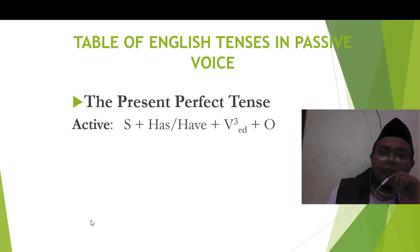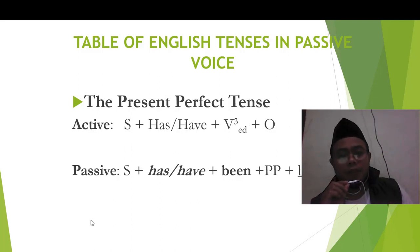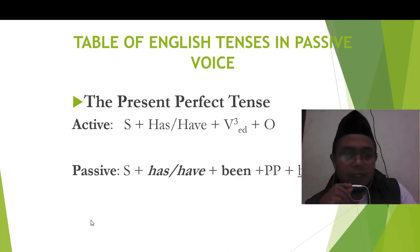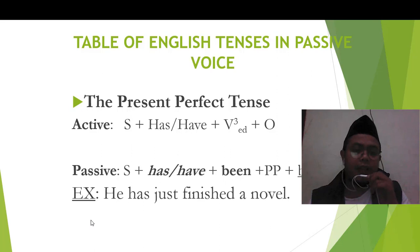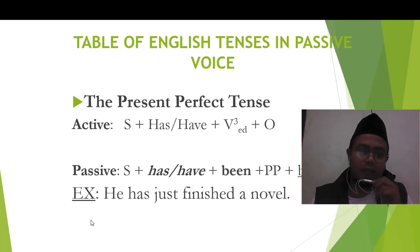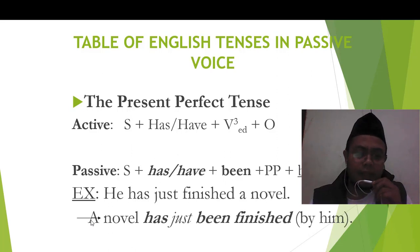What about present perfect tense? Subject plus has or have plus verb 3 (past participle) plus object. It becomes subject plus has or have plus been plus verb 3, and so on. Here the example: He has just finished a novel — dia baru saja menyelesaikan novel. So it becomes: A novel has just been finished by him.